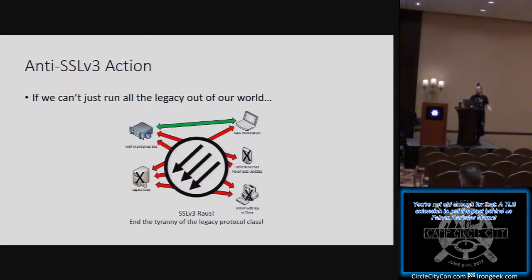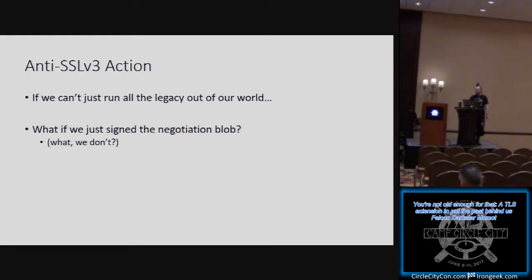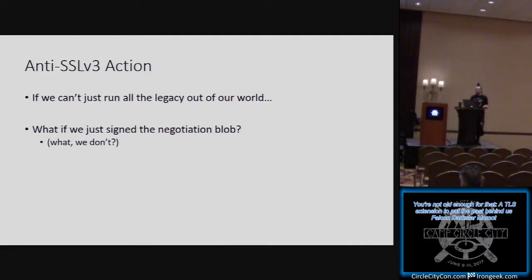If we can't just get rid of SSL v3 and burn it to the ground, what if we just sign the negotiation blob? Unfortunately, we don't — and if you remember what I was dissecting in Wireshark, you'll notice we don't start signing anything until very, very late in the TLS exchange. The reason is that until that point, we haven't decided what algorithms everyone supports and what key we're going to use. It may be possible to do this piecemeal, but that would interfere with supporting DSA, RSA, and elliptic curve in your TLS certificate. So we don't just sign the negotiation blob, and that solution wouldn't work anyway.